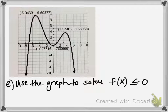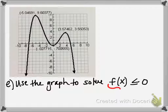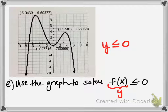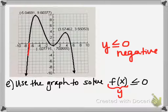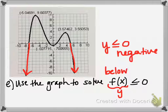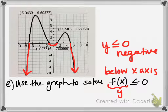Now we want to use the graph to solve f(x) ≤ 0. Rather than solving the inequality algebraically, we're using the graph. Remember, f(x) is just a fancy way of writing y. So this is basically asking: where on this graph are your y values less than or equal to 0? In other words, where are those y values negative? If the y values are negative, we'd be below the x-axis. So this is asking what parts of the graph lie below the x-axis. It turns out there are three pieces of the graph below the x-axis, and we're solving for x — so the answer will be the x intervals for those three portions.